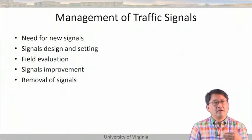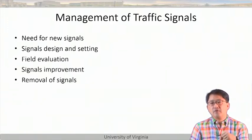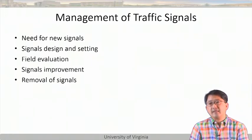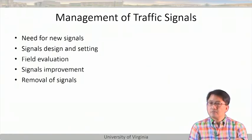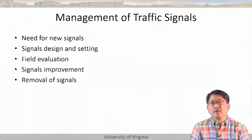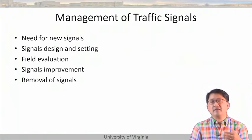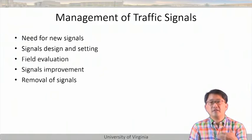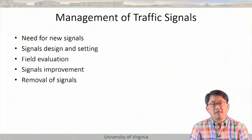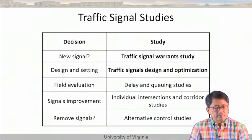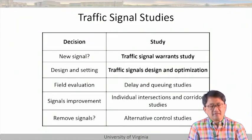Think about it: at a signalized intersection, red light runners cause high-severity crashes, whereas roundabout crashes are usually rear-end crashes — not that severe. Roundabouts often also provide much higher capacity. The early challenge in the US was that people didn't know how to drive at a roundabout — should I yield going in or wait for a gap? That has improved now, and the US is adopting more roundabouts.